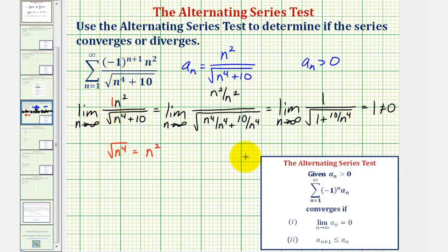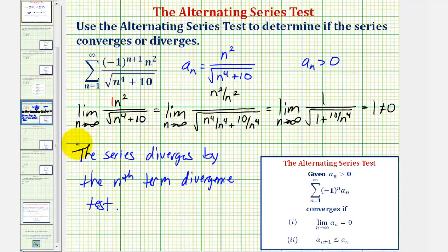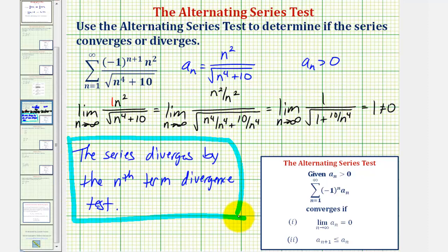So if the alternating series test doesn't apply, then the series diverges by the nth term divergence test. I hope you found this helpful.